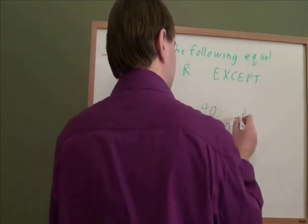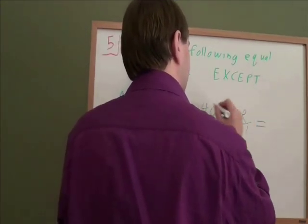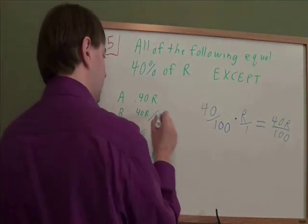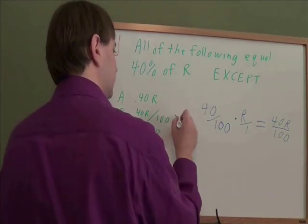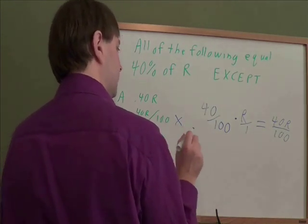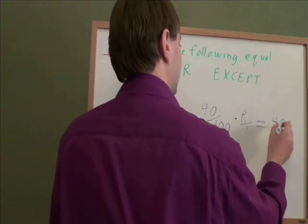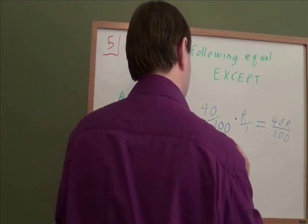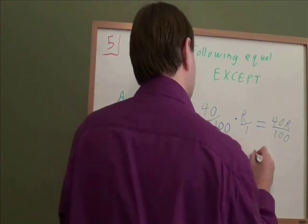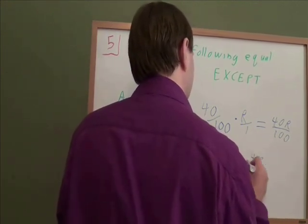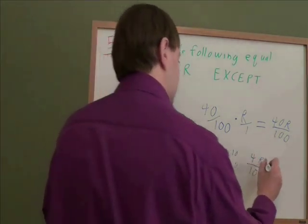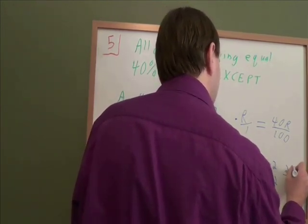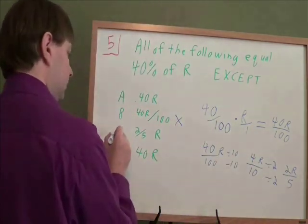So we've got 40R over 100. And you can just write that all as one fraction. A times R is like A times R over 1. And that is 40R over 100, which is this answer here. So we've just figured out that this does equal 40% of R. And now let's see what else it could equal. What if we reduce this 40 over 100? Well, let's see, 40 over 100, they have 0's at the end, so they both divide by 10. 40 divided by 10 is 4. The R is still there. 100 divided by 10 is 10. And then we can keep going. 4 and 10 are both even, so they will both divide by 2. That gives us 2R over 5, which is answer C here.